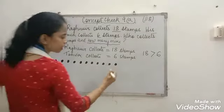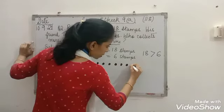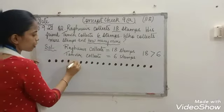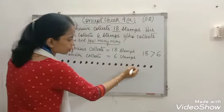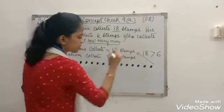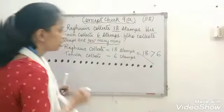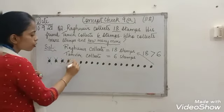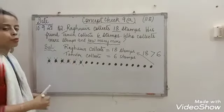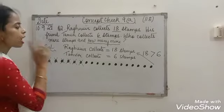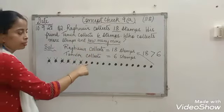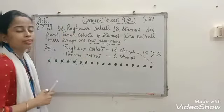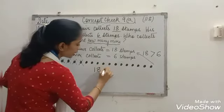These are the dots representing the number of stamps. See here — 1, 2, 3, 4, 5, 6, 7, 8, 9, 10, 11, 12, 13, 14, 15, 16, 17, 18. These 18 dots represent 18 stamps. Now, from this, we are going to cross out 6 dots — 6 stamps. We will subtract: 1, 2, 3, 4, 5, 6. Now let's count the remaining — 1, 2, 3, 4, 5, 6, 7, 8, 9, 10, 11, 12. In subtraction form, 18 minus 6 equals 12.